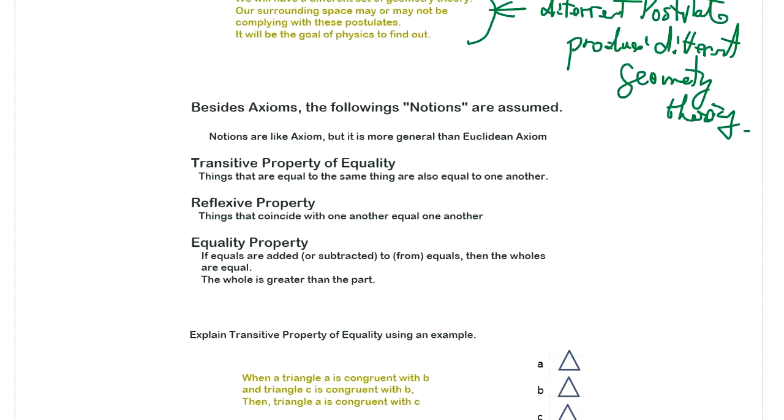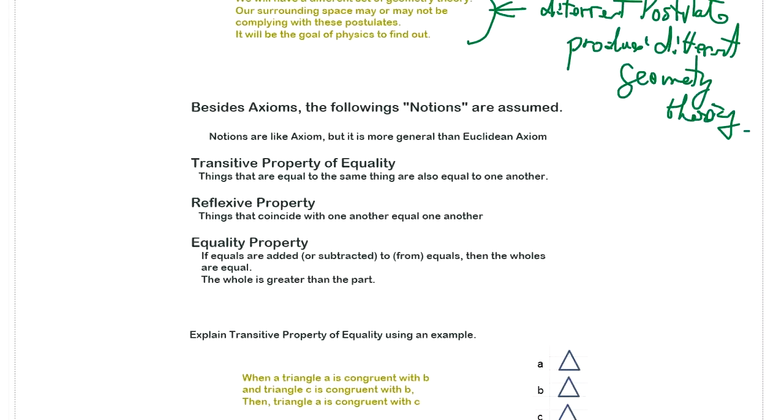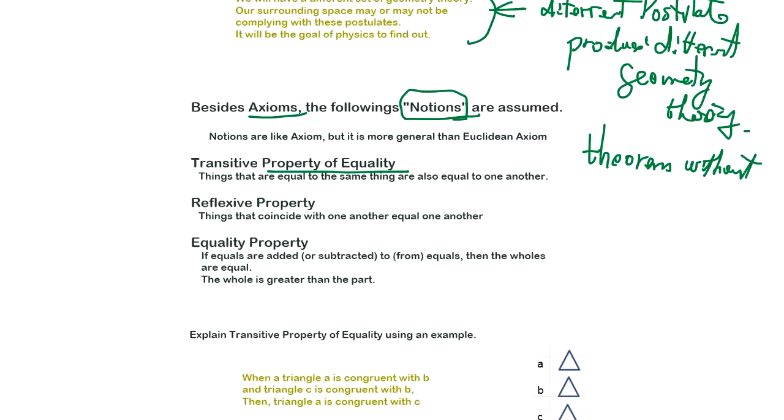There are many things. Well, this, what we assume is correct already in geometry, in middle school and elementary school. So besides this axiom and postulate, we have another one called notion. And notions is like the first established theorem without proof. So you don't have to prove those. This is correct.